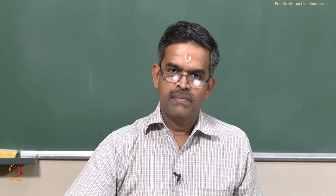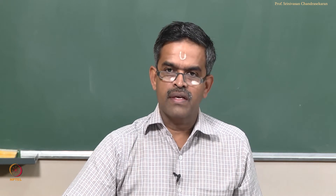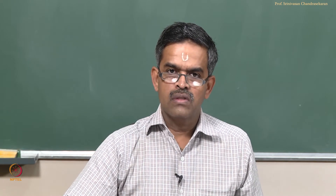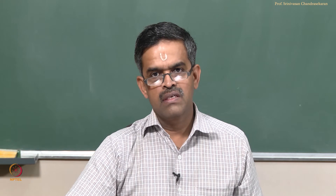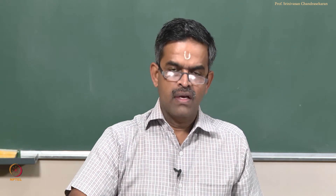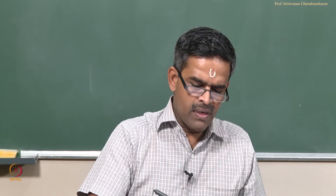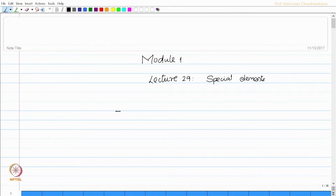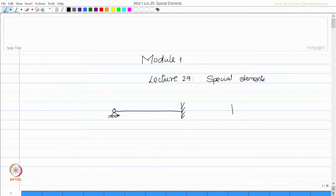So how do we handle them? This lecture 29 is going to discuss about the formation of stiffness matrix for special elements. Let us take for example an element with one end fixed and other end hinged. For a standard beam element, my standard beam element has both ends fixed.